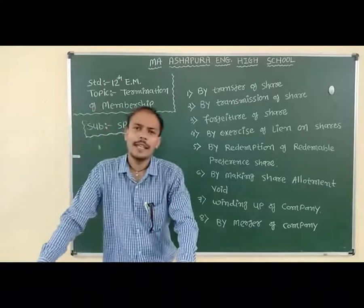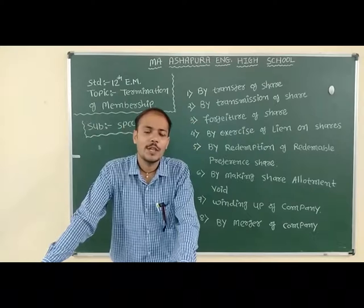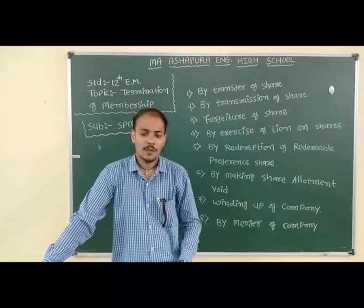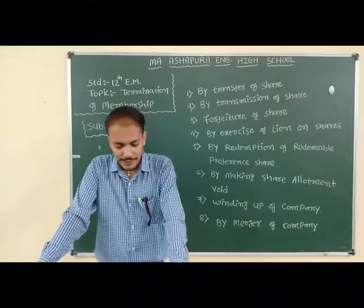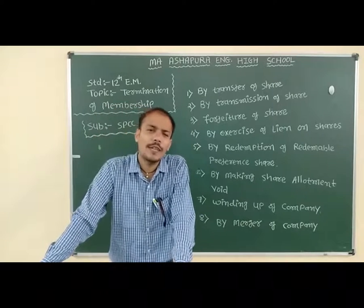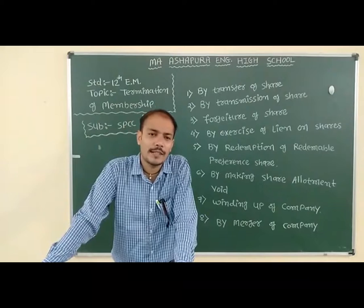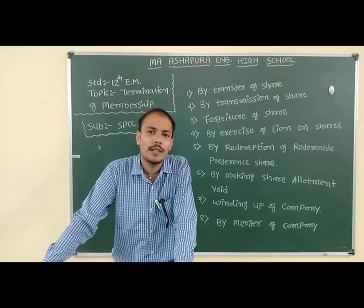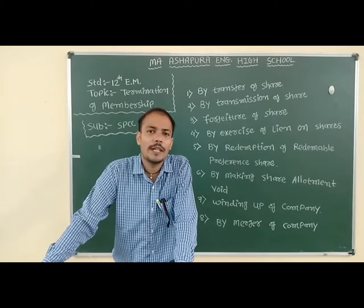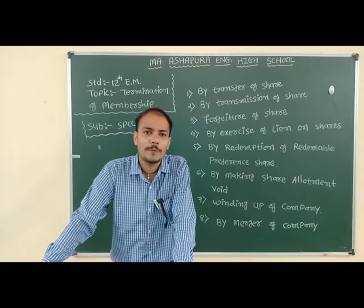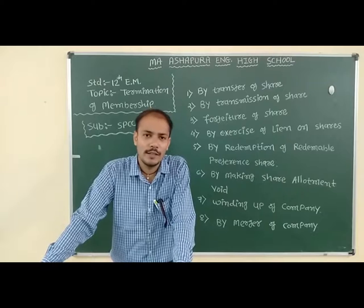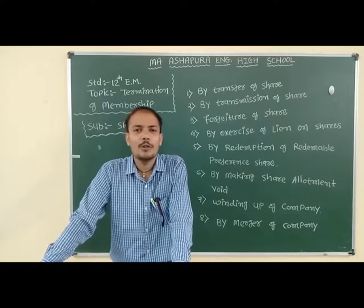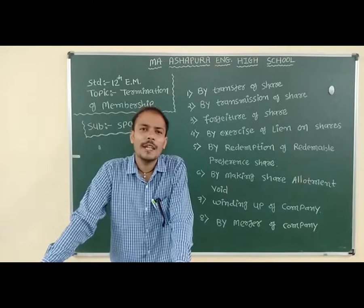Point three: Forfeiture of shares. When shares are purchased in installments, it is expected that the amount of money is paid in installments as decided. If the shareholder fails to pay the installment amount, the company proceeds with forfeiture.